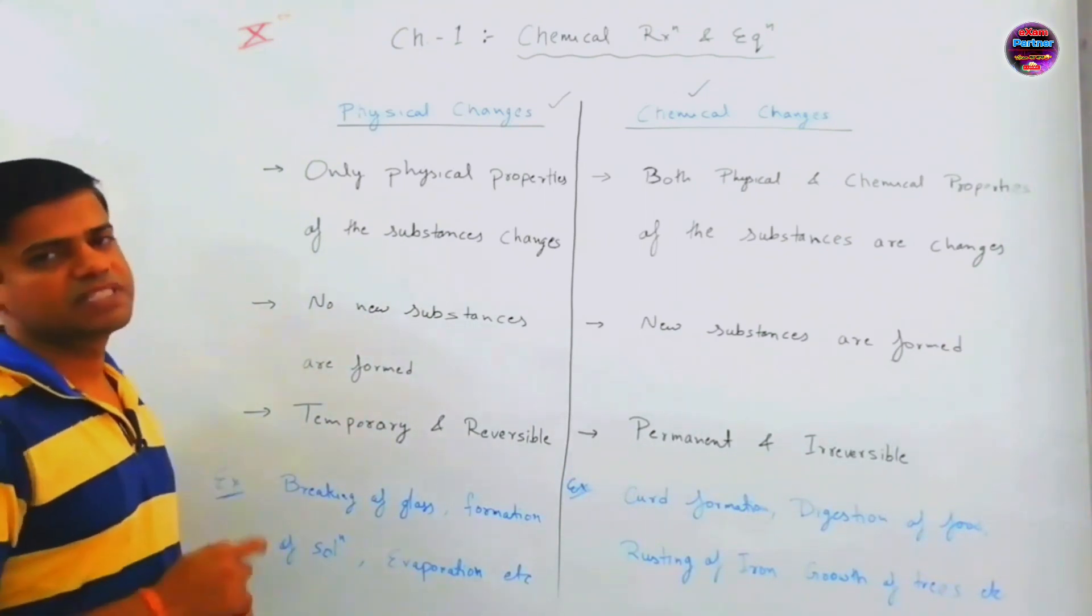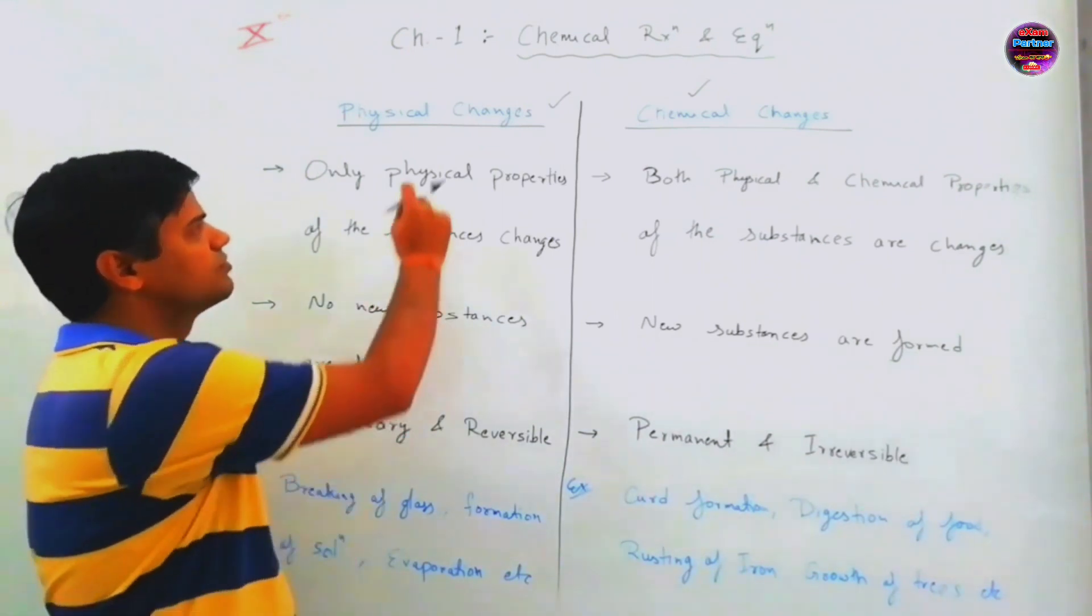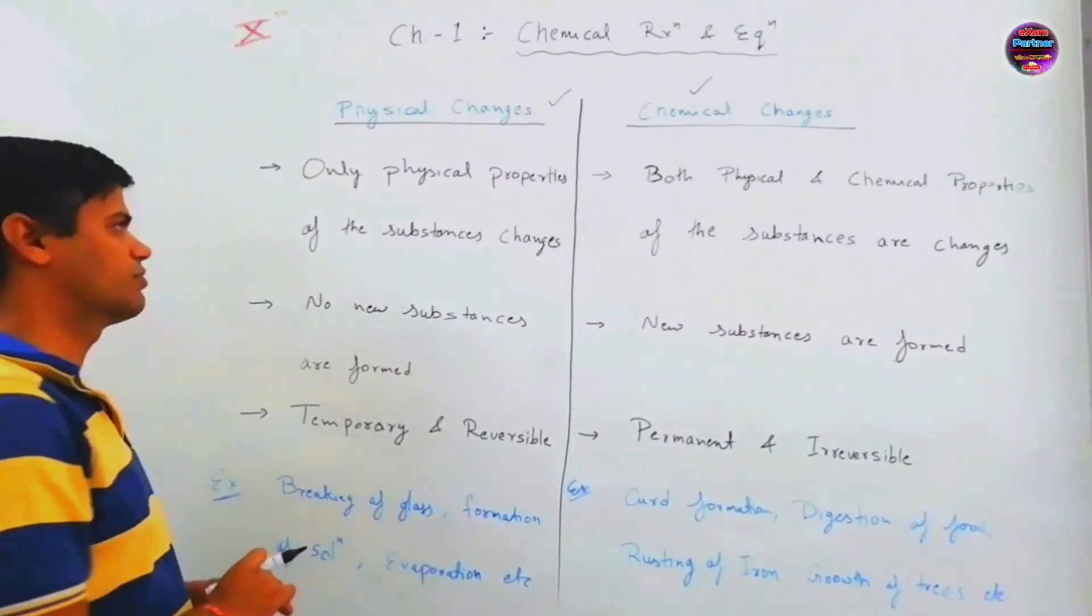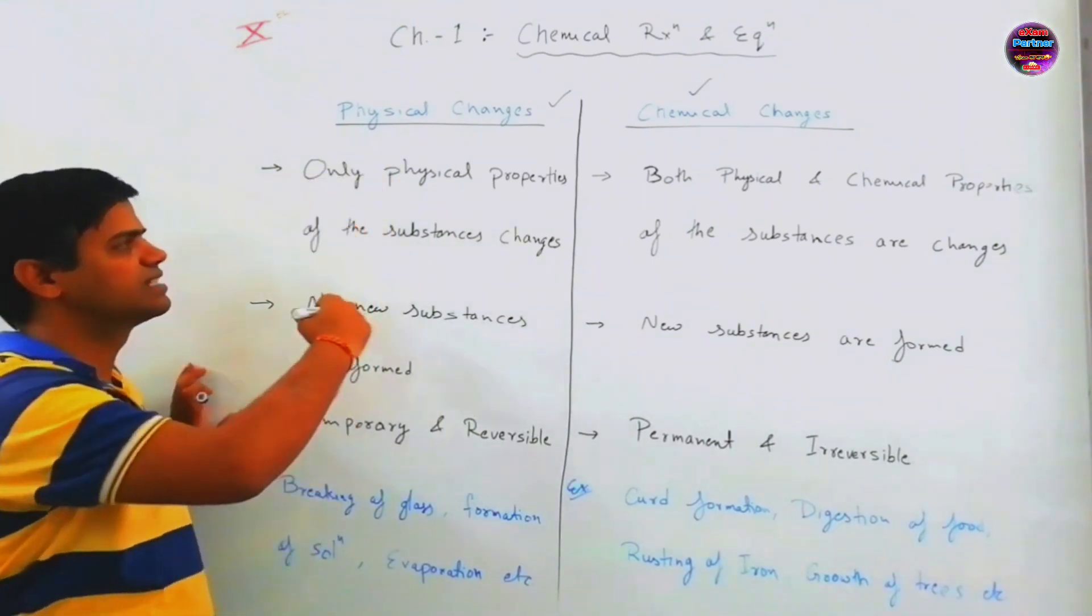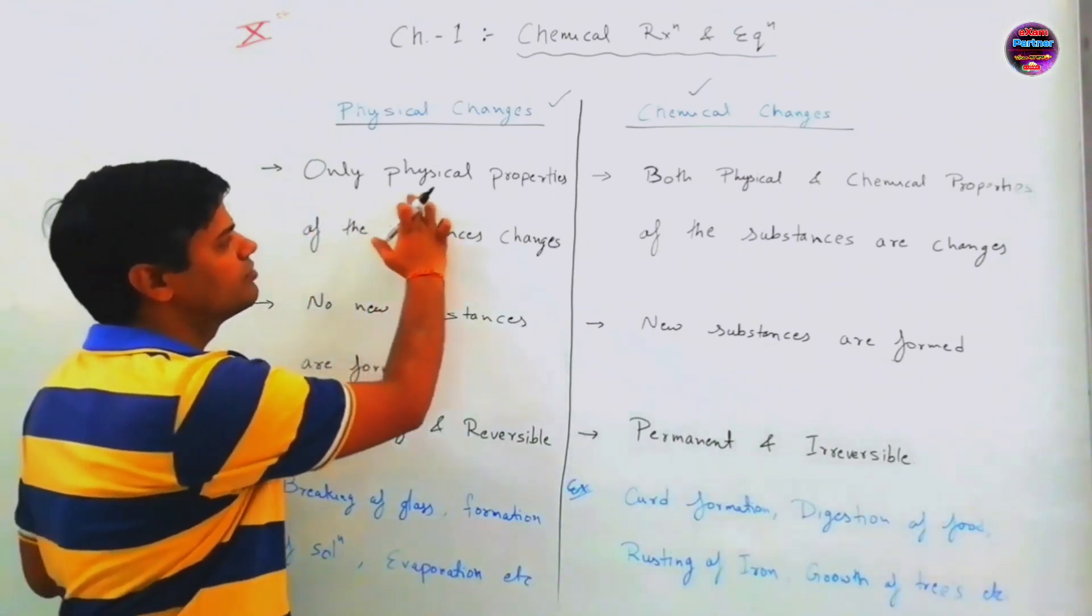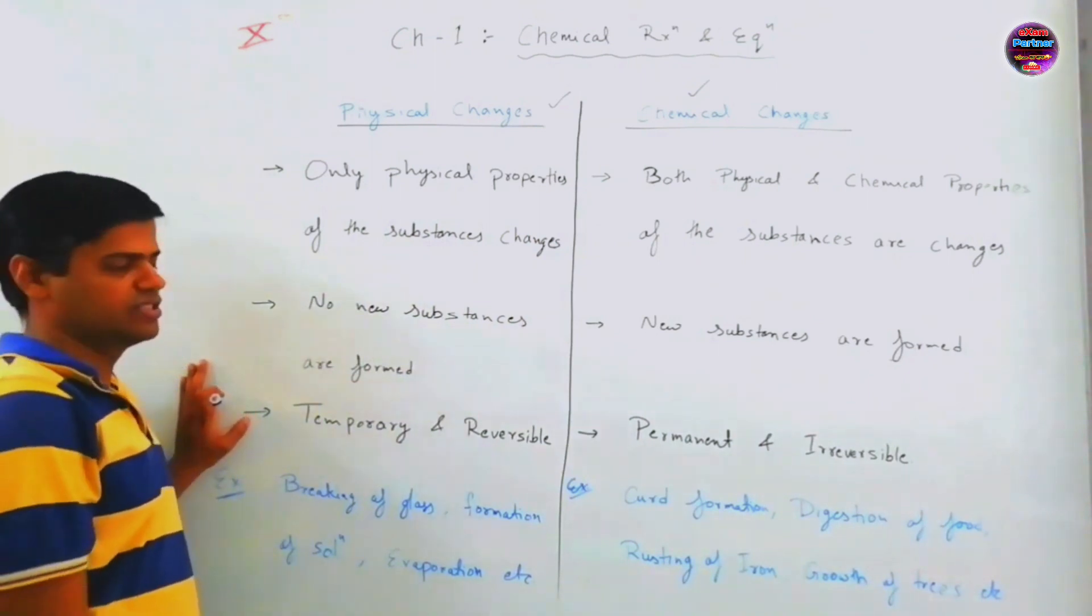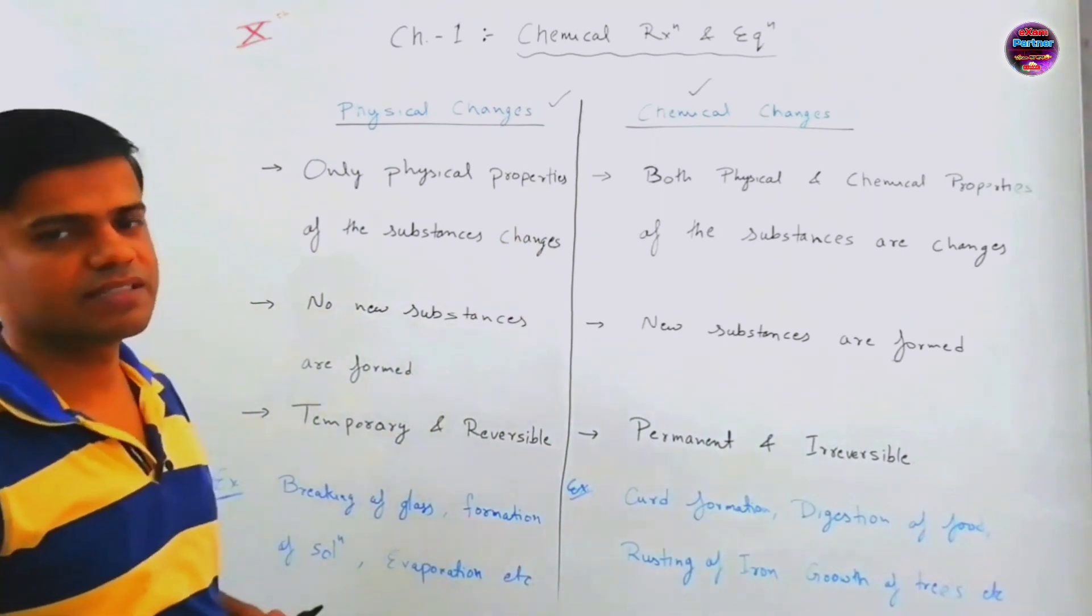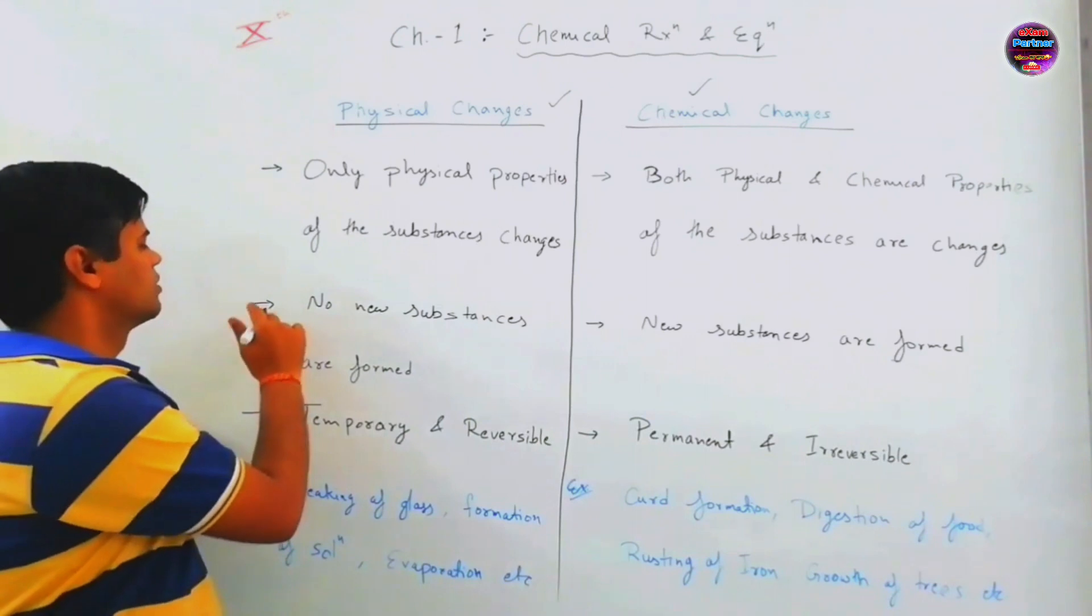First, we have some changes. Physical change and chemical change. This is the class nine. But now we will revise. First, physical changes. Consider what are the chemical changes? Those changes in which only physical properties of the substance are changed. While chemical changes, both physical as well as chemical properties of the substance are changes.